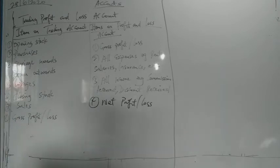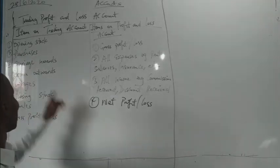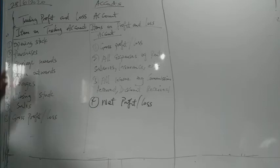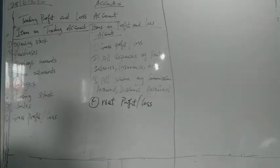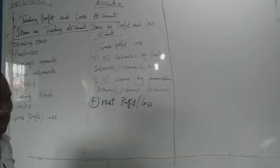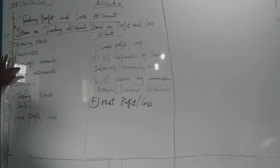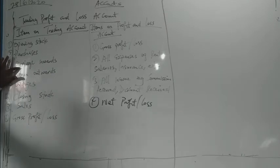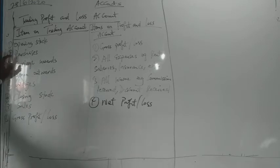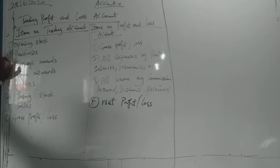During the current accounting year, the business will also purchase some other stock and add it to the opening stock, so the total stock will increase. When you add the two of them, those are known as goods available for sale. Carriage inwards is a direct expense — it is attached to purchases. If you don't make purchases, you can never incur carriage inwards expenses. So it is directly related to the stock of the business.